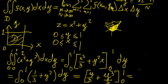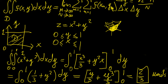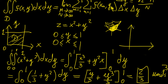This gives us 2/3. So the volume underneath that particular surface within the unit square region is 2/3 cubic units. This example illustrates the basic properties of double integrals, and this is the simplest case of a region. Regions can be more complex, which we will explore in the next few videos.